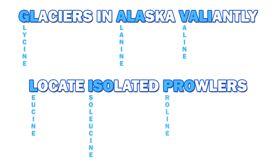It is key to remember them in this order — glycine, alanine, valine, leucine, isoleucine, proline — because this makes it relatively easy to remember the structures.